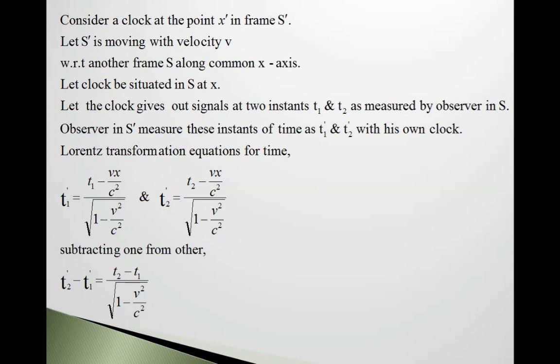The clock gives out signals, light signals at two instants T1 and T2 as measured by observer in frame S. Also, the observer in S' measures these instants of time as T1' and T2' with his own clock.